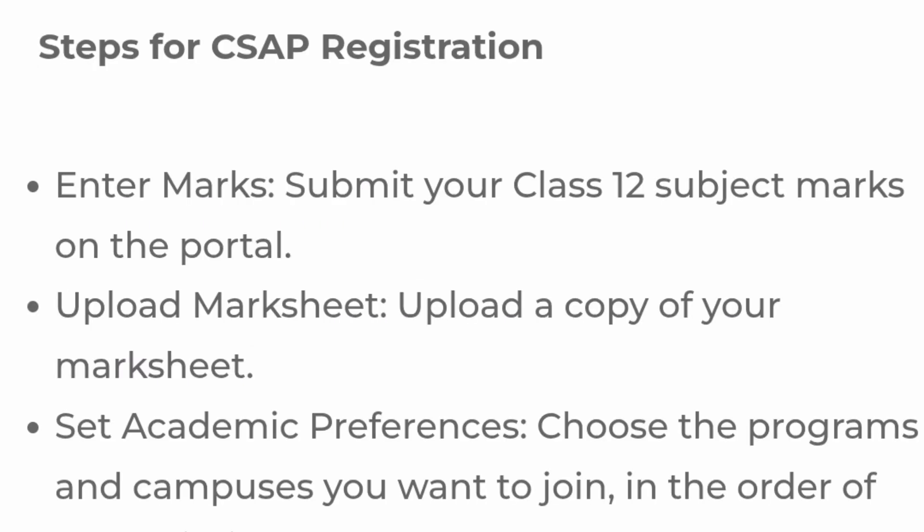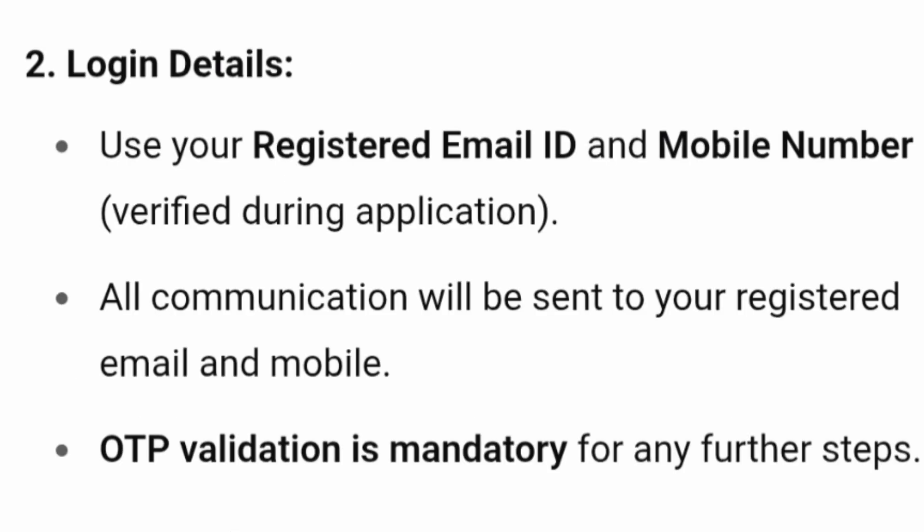For CSAP registration, you have to enter your class 12 subject marks on the portal, upload a copy of your mark sheet, and set your academic preferences — choose the program and campus you want to join in order of priority. You must use the registered email ID and mobile number used during the application form as the same combination to log into the Amrita CSAP portal.